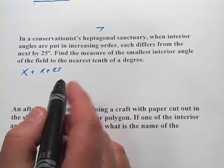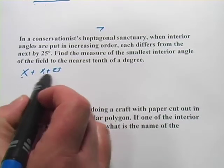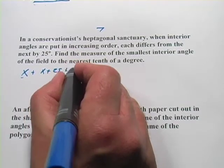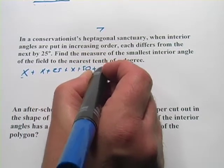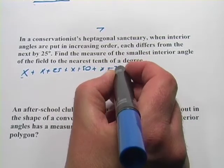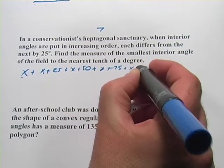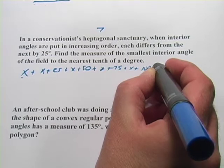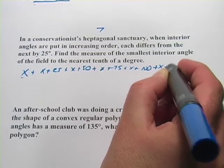Let me list out all the angles first. Here's the first one x, the second one is x plus 25, the next one is x plus 50, then x plus 75,